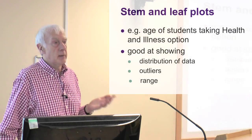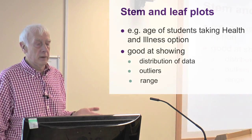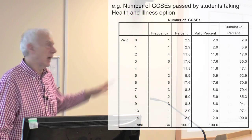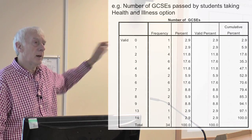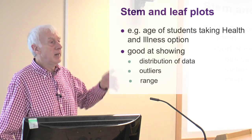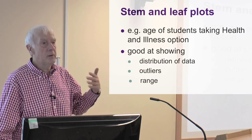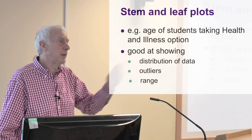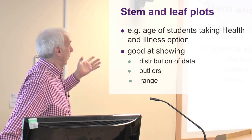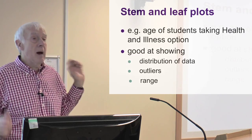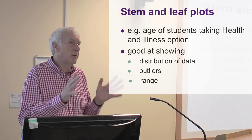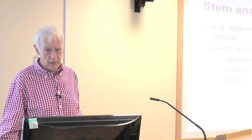Perhaps a better way of displaying this is some kind of visual mechanism. The stem and leaf, as I said, was developed by Tukey, and is one way of showing this kind of distribution. Reading a table takes some time to get to grips with it — it would be nice if we could see the data in some other way. The stem and leaf plot is a way of writing down the numbers in a structured format so you can then see what the distribution looks like, get a feel for where most people are and where fewer people are. So the stem and leaf plot is good at showing distribution of data, good at showing outliers — the ones at the extremes — and also the range.